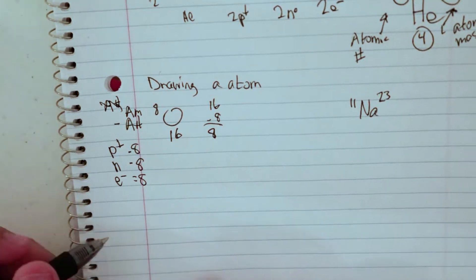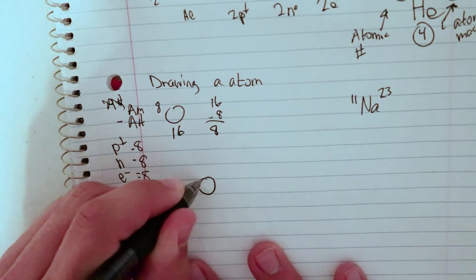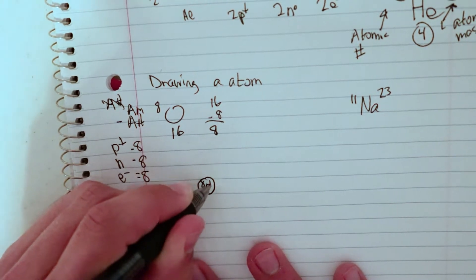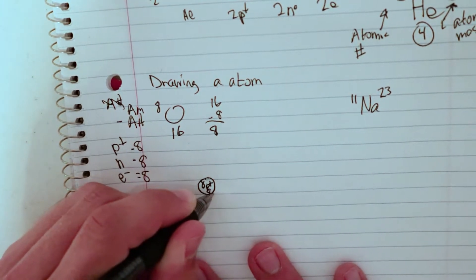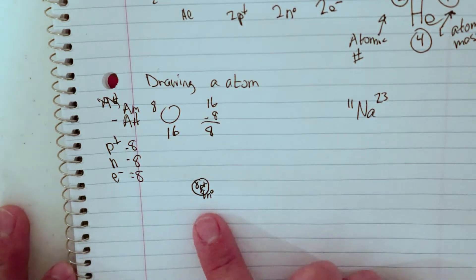So now I want to put these in a Bohr model. First for the Bohr model, I'm going to draw a nucleus, so I'm just going to draw a circle and write 8 protons, P with a plus, and then 8 neutrons, N with a zero for no charge, and that's really tiny.